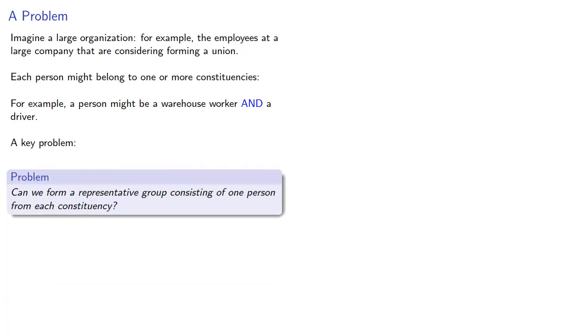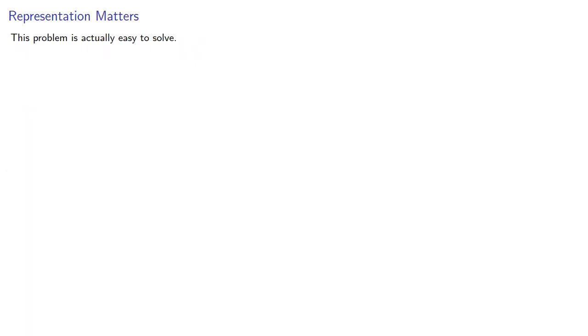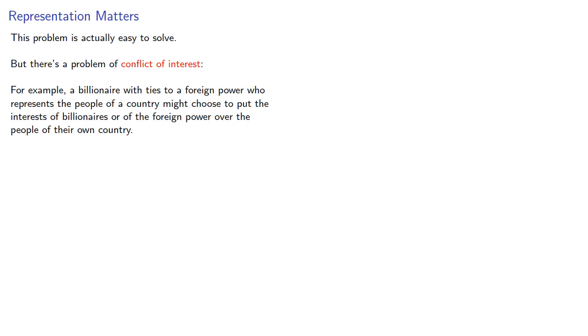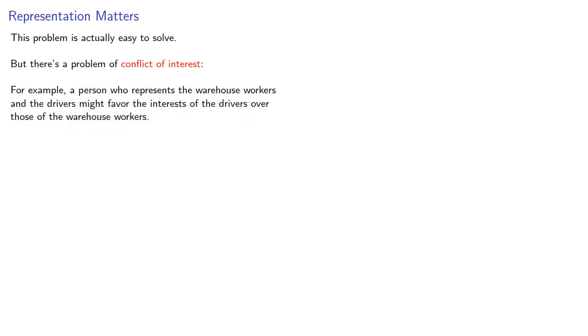Can we form a representative group consisting of one person from each constituency? This problem is actually easy to solve, but there's a problem of conflict of interest. For example, a person who represents the warehouse workers and drivers might favor the interest of the drivers over those of the warehouse workers.